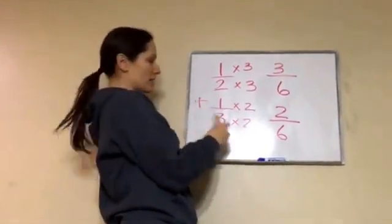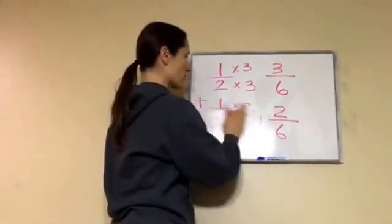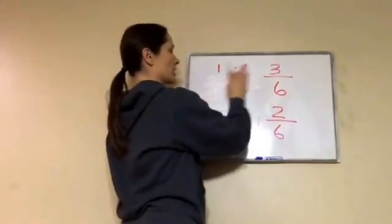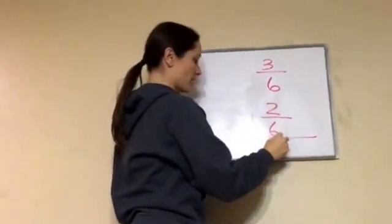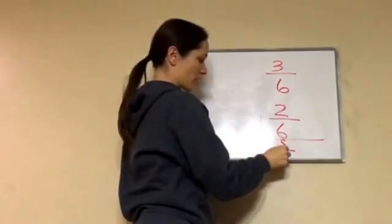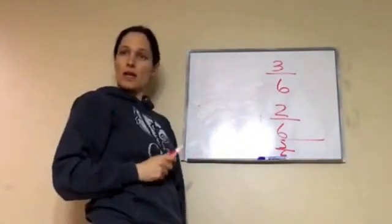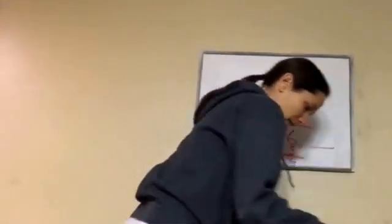Alright, and so we're adding this. I'm going to erase all the other stuff because it just gets in the way. Now let's work our problem. 3 plus 2 is 5, and then 6 is our common denominator, so we just leave it. The answer is 5 sixths.